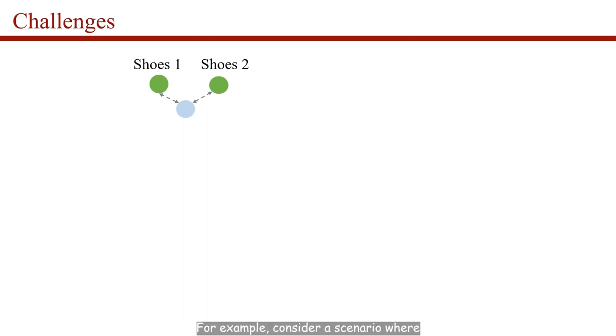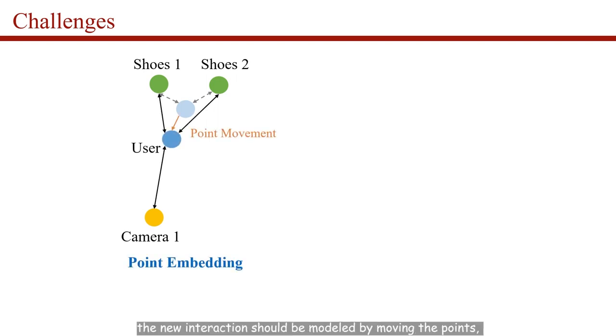For example, consider a scenario where a user has had interactions with shoe 1 and shoe 2 and has a new interaction with camera 1. Using point embedding, the new interaction should be modeled by moving the points, but the movement of the user node towards the camera 1 node is constrained by the two shoe nodes, making it impossible to recall camera 2.